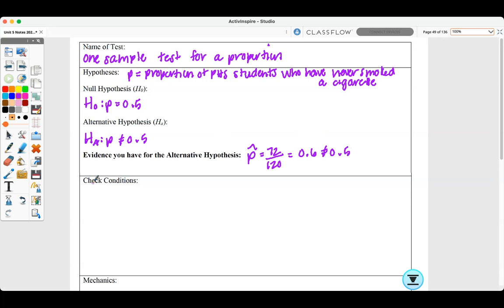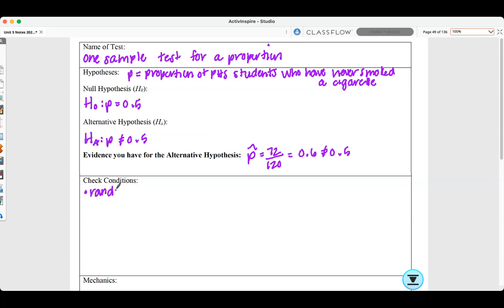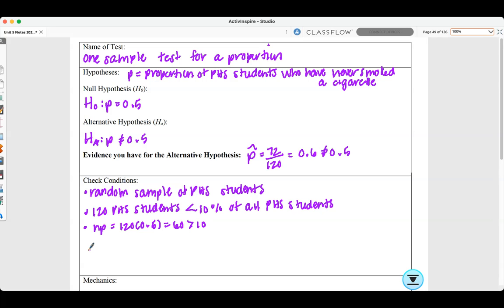Again, we check our conditions. We were told it's a random sample of PHS students. 120 PHS students is less than 10% of all PHS students. And N times P equals 120 times 0.5, which equals 60, which is greater than 10. And N times Q equals 120 times 0.5, which also equals 60, which is greater than 10. So our sample size is large enough.